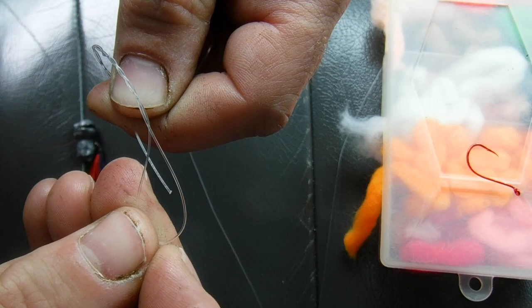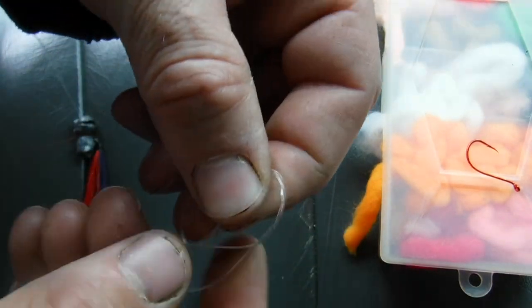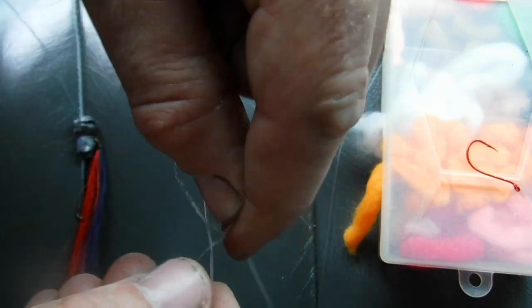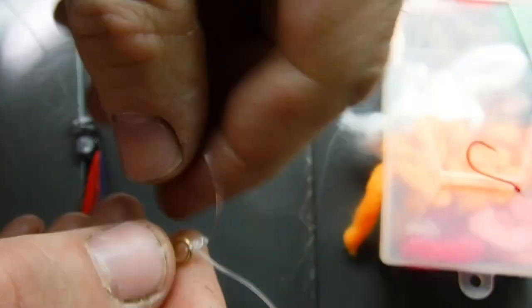As I poke it through there I create another loop. I just push it back through. And then I can pull that tight.